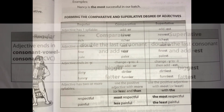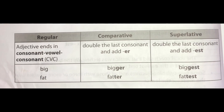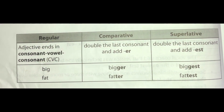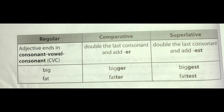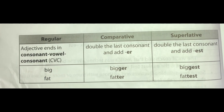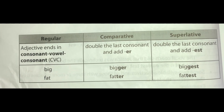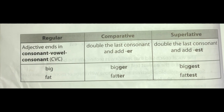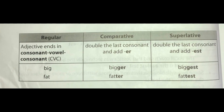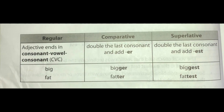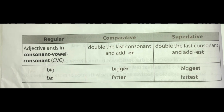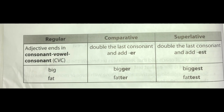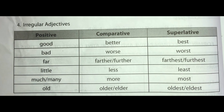Adjective ends in consonant-vowel-consonant, or CVC: double the last consonant and add -ER for comparative; double the last consonant and add -EST for superlative. Example: big — bigger — biggest. Fat — fatter — fattest.